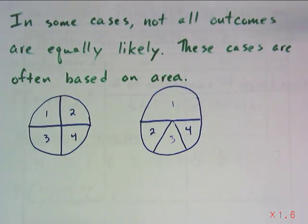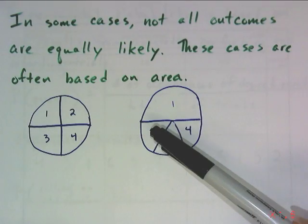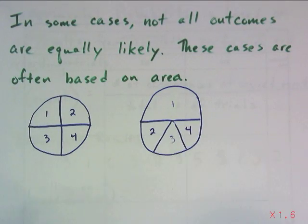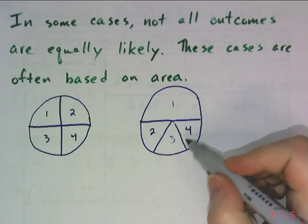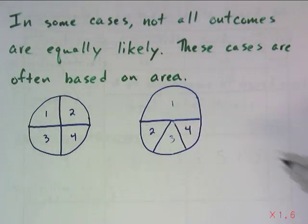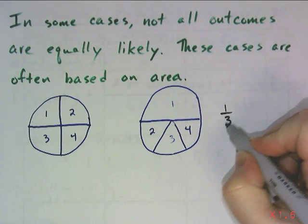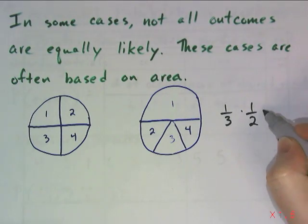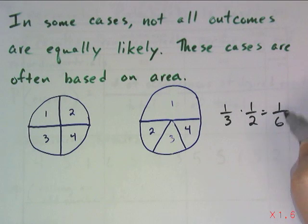Therefore, you would not assign them the same likelihood of being landed on. The one here is half of our circle, so you have half a chance of landing on one. The two, three, and four - what I was trying to draw is that each of these are a third of this half. So a third of the bottom half of the triangle means that each of those have a one-sixth chance of being landed on.